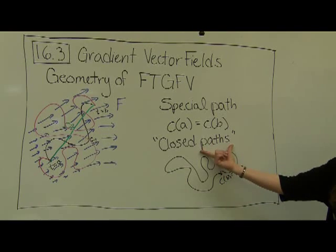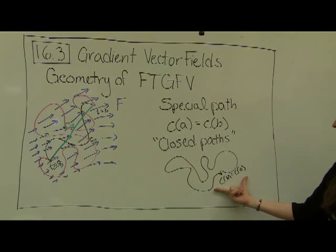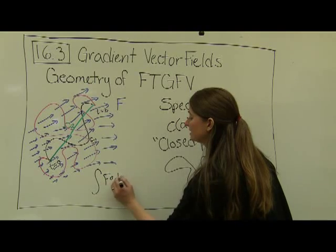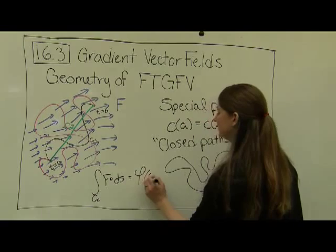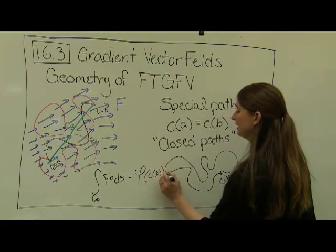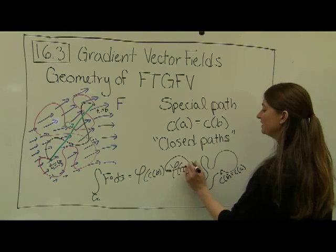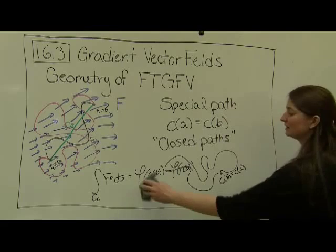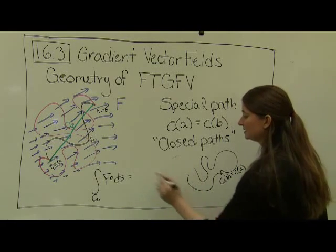So for any closed path, we just decided that our line integral over this closed path is going to be given by the line integral over F ds of our closed path is going to be phi of c of b minus phi of c of a. But if phi of c of b is equal to phi of c of a, then any time I take a line integral over a closed path, this is going to be exactly equal to 0.